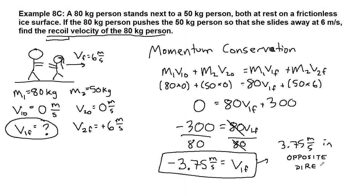So no matter how you drew the picture, really what that negative sign is telling us is that the 80 kilogram person moves apart from the 50 kilogram person.